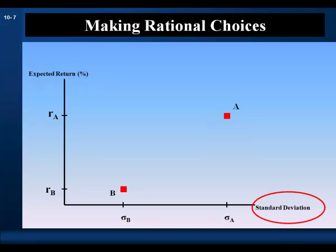The standard deviation of a portfolio depends upon three things: the proportion of the portfolio invested in each security, the variances or standard deviations of the securities, and the covariances or correlations between the securities.